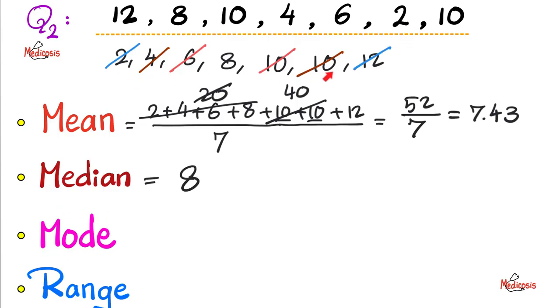How about the mode? Which one is repeated the most? 10 is repeated twice. But other than that, everything is only repeated once. So, the mode a la mode is 10. It's the most trendy.